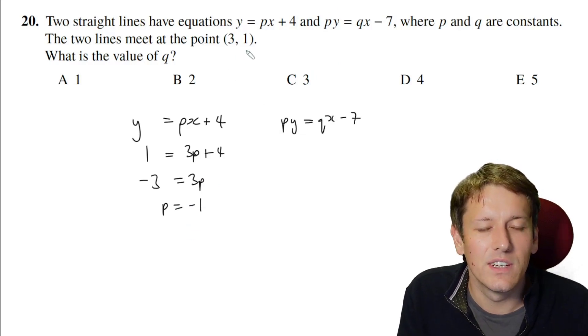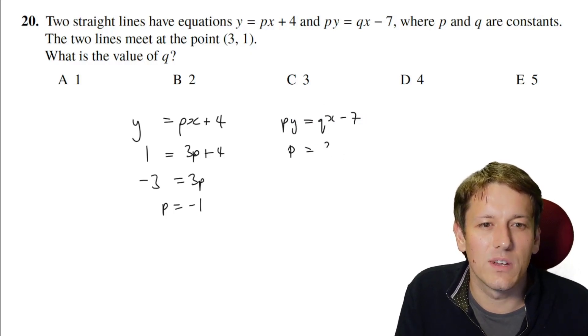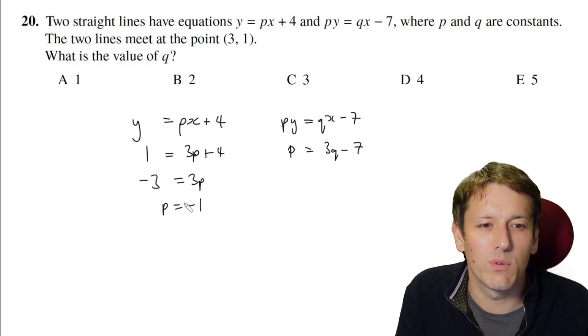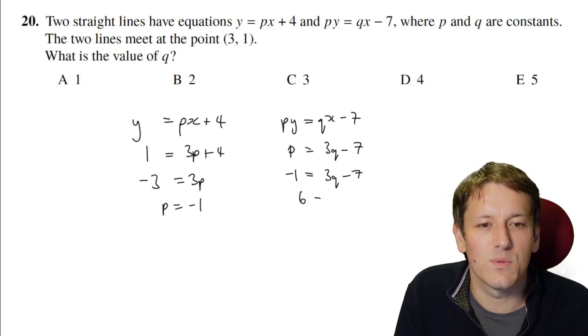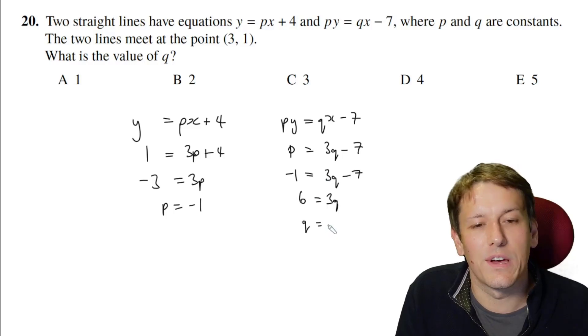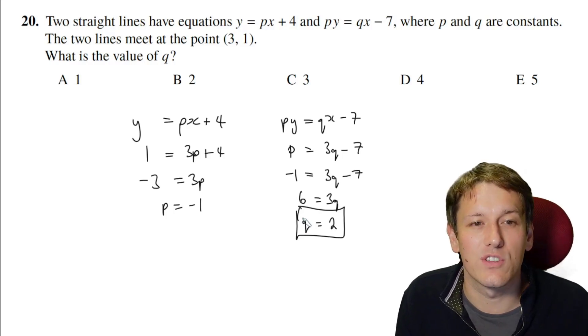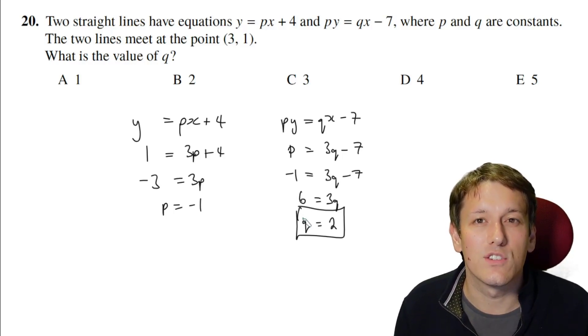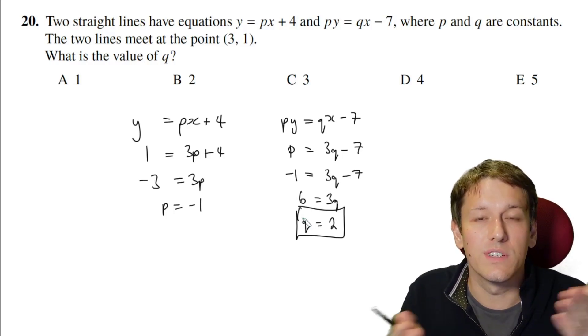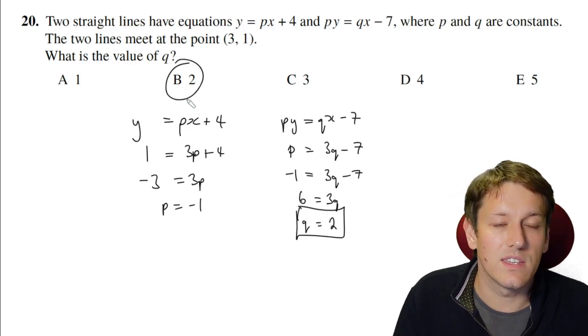Now if I do the same with the other equation, PY equals QX minus 7, well Y is 1 here, so P times 1 is P, I've got Q times X, Q times 3, so that's 3Q minus 7. We already know that P is minus 1 now, so I've got minus 1 equals 3Q minus 7, add 7 to each side, I get 6 equals 3Q, and divide by 3, and I get Q is equal to 2. So actually, if you make sure you keep this a totally algebraic question, just using that idea that the graph of an equation is just the set of all of the points that satisfy the equation, whose coordinates satisfy the equation, substitute the coordinates into the equations, they're on both lines, so that gives us P and Q directly here. So we've got Q equals 2, and the answer is B.